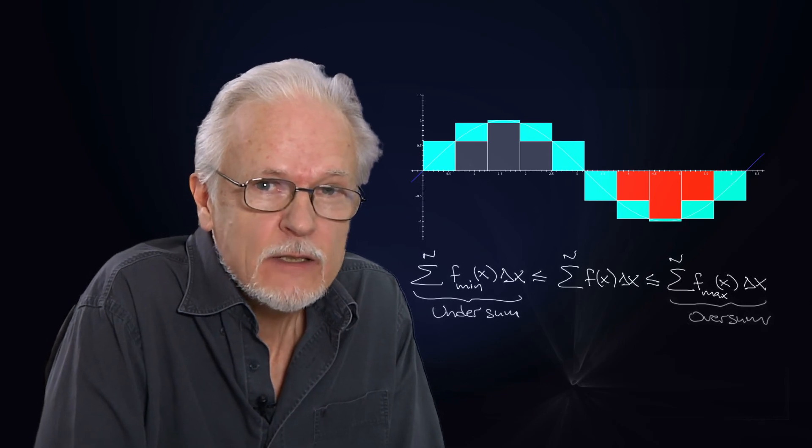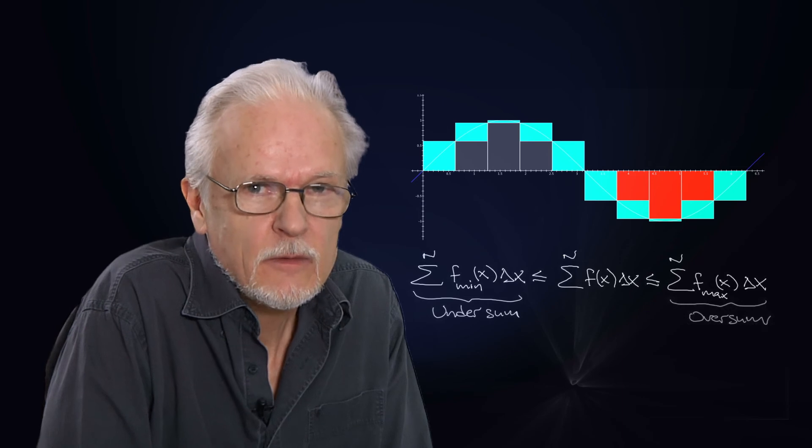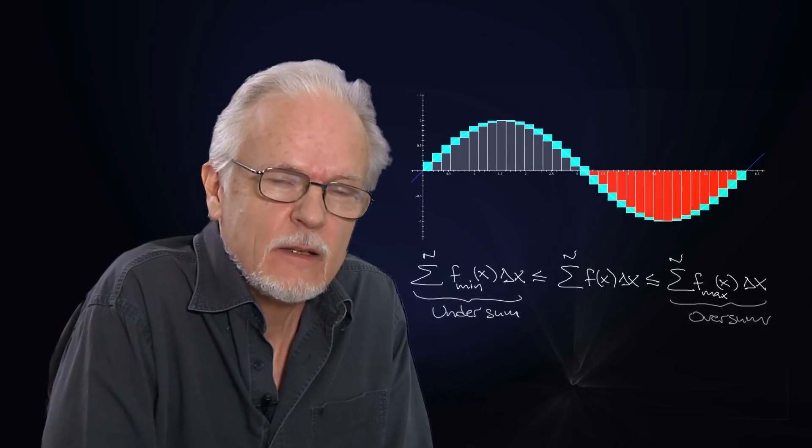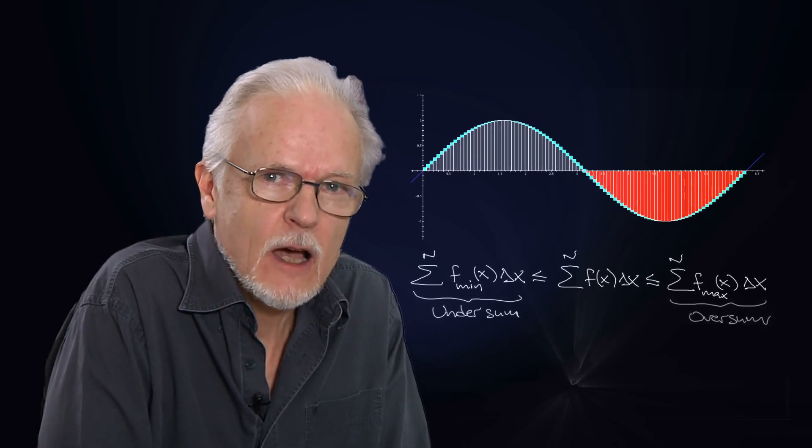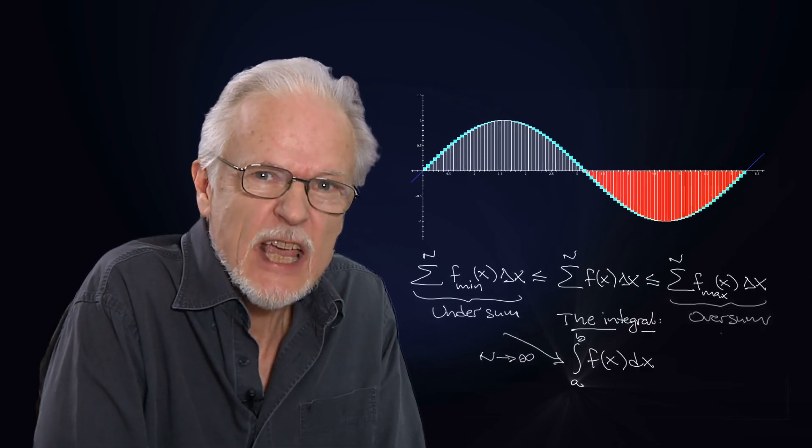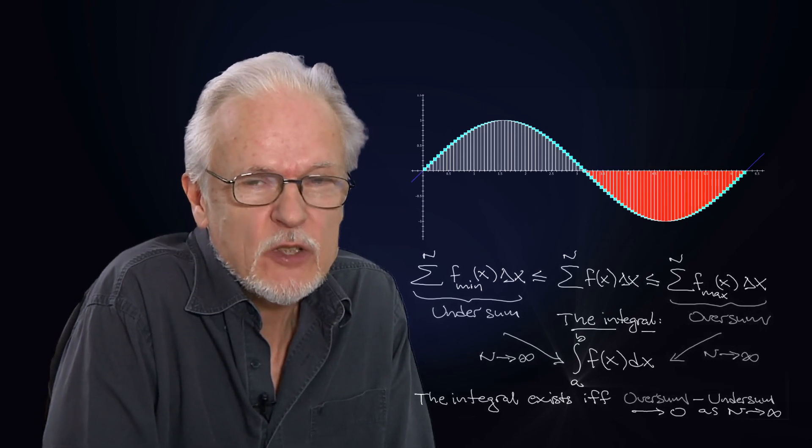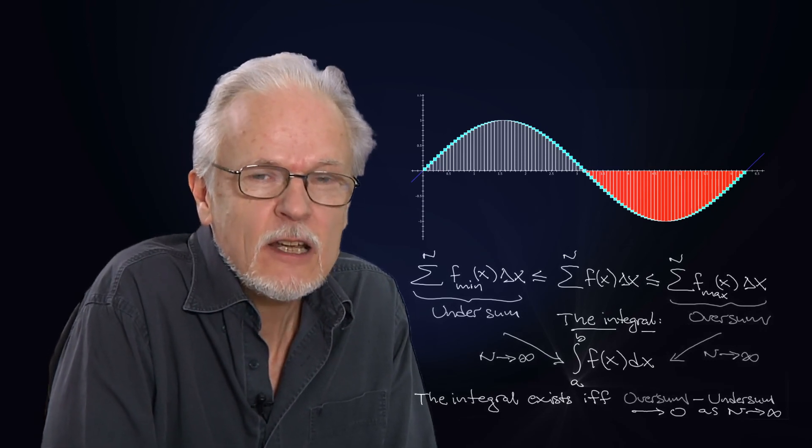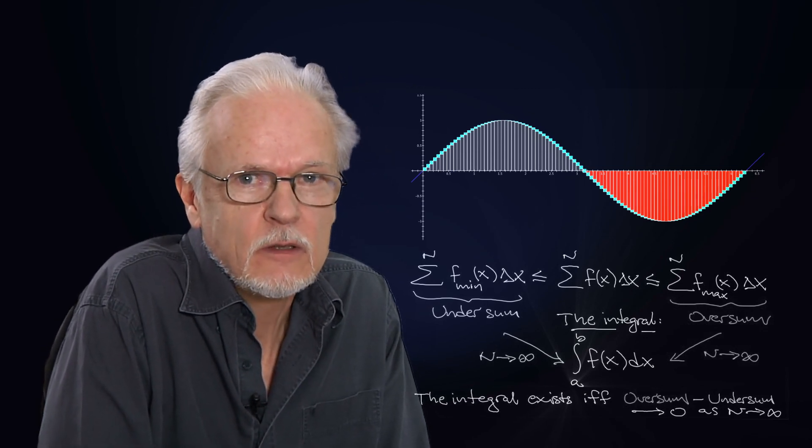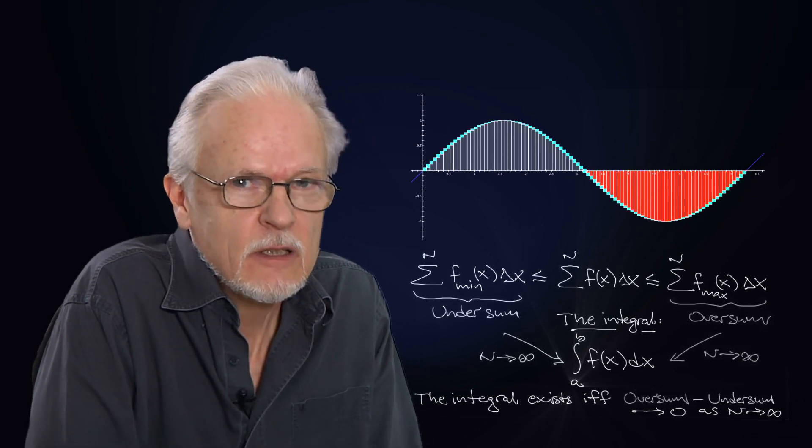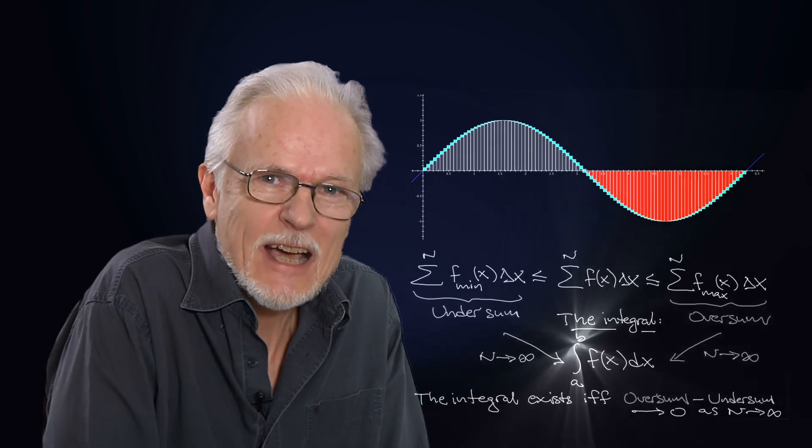And the idea of the integral then is that we are slicing thinner and thinner and approaching a limit. And if the oversum and the undersum approach the same value, then we have boxed in the integral between these values, and that common limit is called the integral of the function over this interval. And this is written as we see here, as this strange stylized S thing, that is the integral sign.